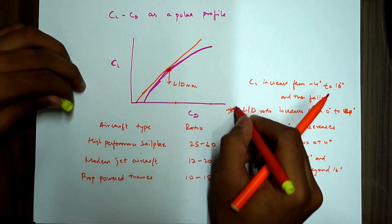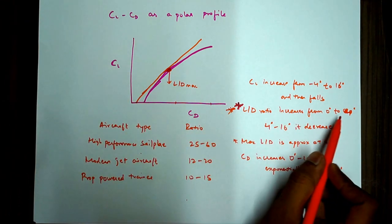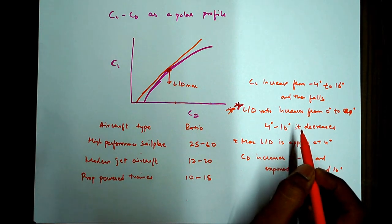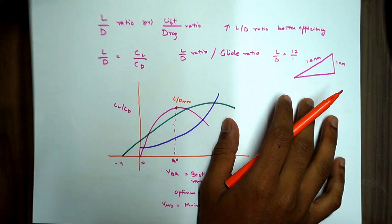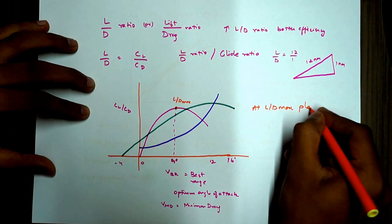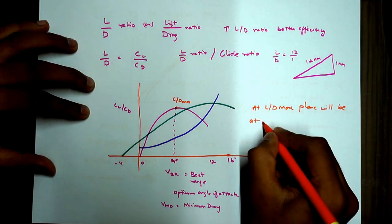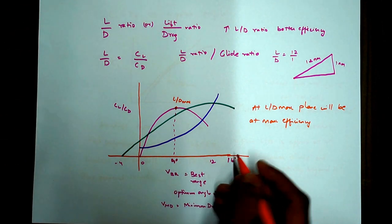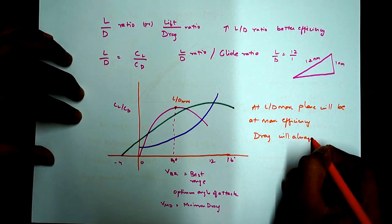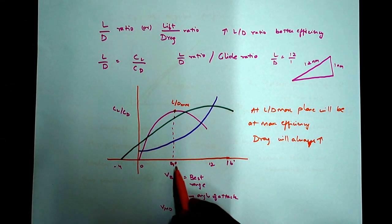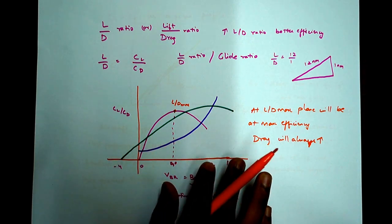Now this point I wanted to discuss again. This one is a crucial point. L by D ratio increases from 0 to 4 degrees and 4 to 16 degrees it decreases. So what interpretation we get from here is, this point is your L by D max. So at L by D max, plane will be at max efficiency. So any angle of attack before 4 degrees and after 4 degrees, your drag will always increase. So this is a key point to note. 4 degrees is approximately. Different planes have different angle of attack. But generally, we're talking at L by D max, you have the maximum efficiency. And anything beyond lesser or higher than that, drag is going to always increase.